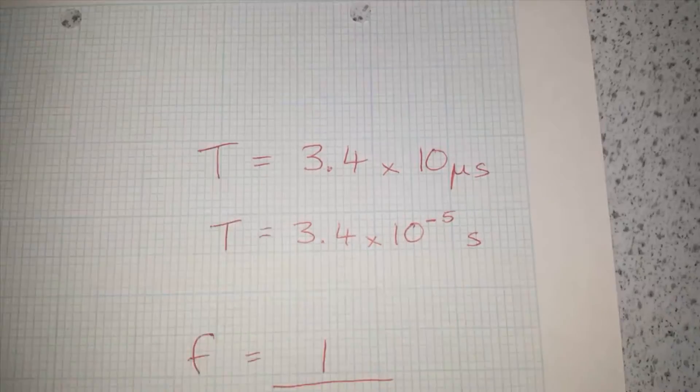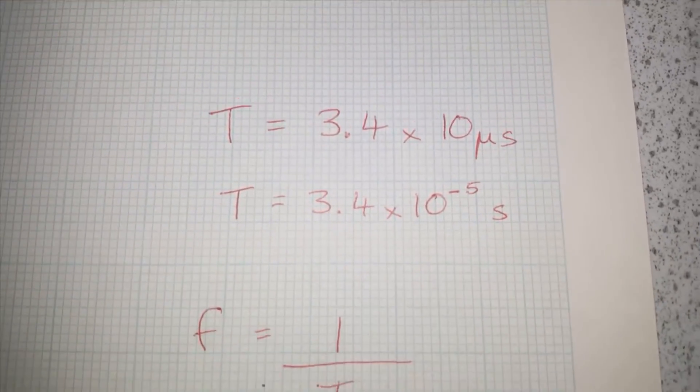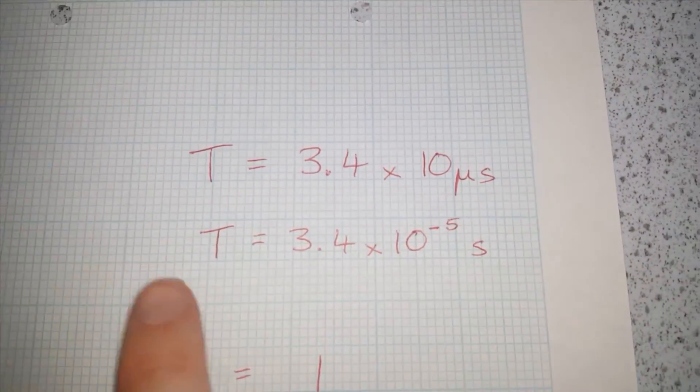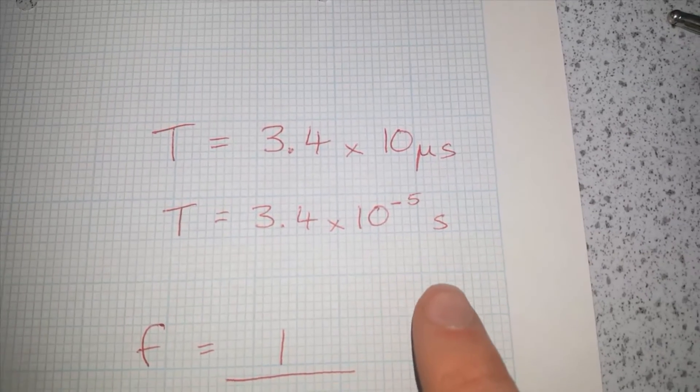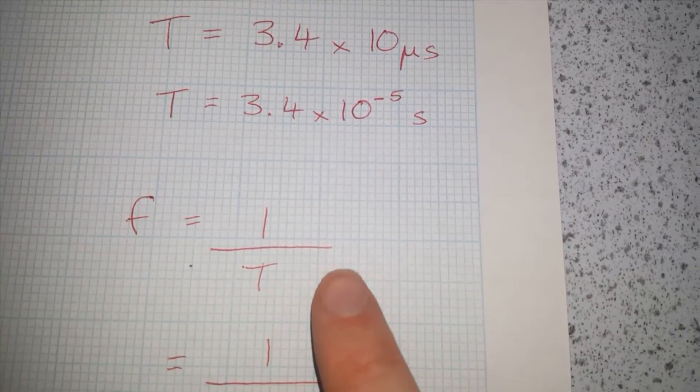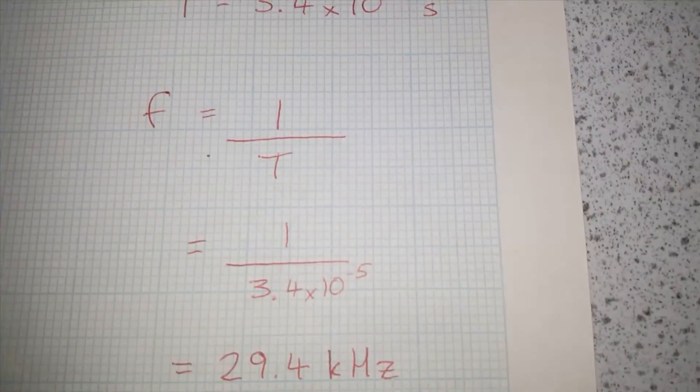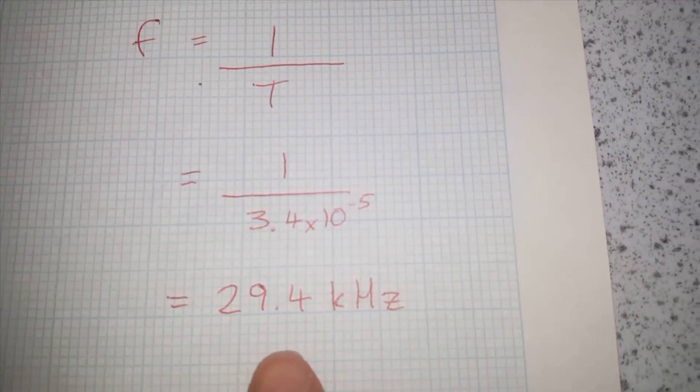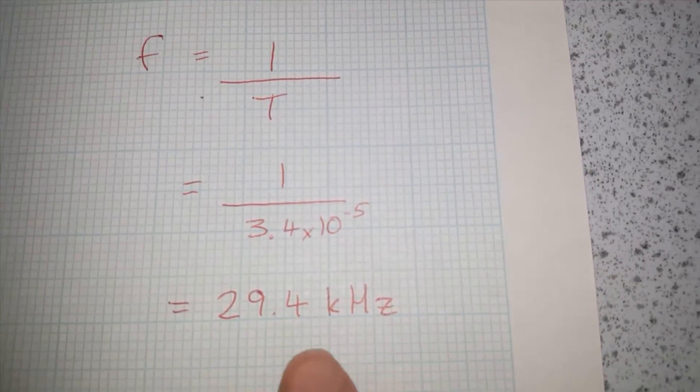So we can use that information to work out the frequency. We know that the time period is 3.4 times 10 to the minus 5 seconds. The frequency is 1 divided by that time period, which will give us 29.4 kilohertz, 29,400 hertz.